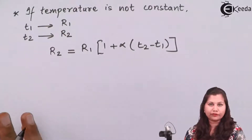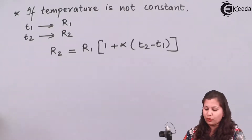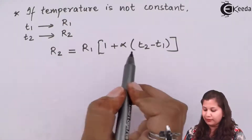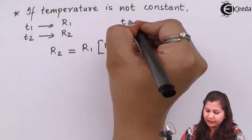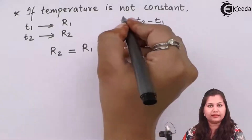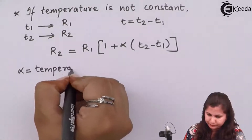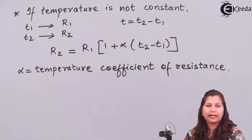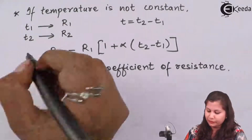R1 is the initial resistance of the material at temperature T1 degrees Celsius. When the temperature changes, the resistance will also change. After temperature T2 degrees Celsius, the resistance of the material is R2. So R2 equals R1 times (1 plus alpha times (T2 minus T1)). T2 minus T1 can be written as T, which is the difference in temperature, and alpha is the temperature coefficient of the material. So one formula is through Ohm's law R equals V by I; another formula is used when temperature is not constant.